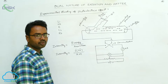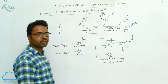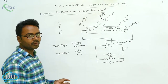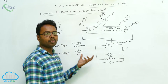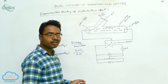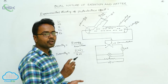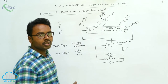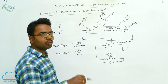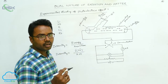At a fixed frequency of incident radiation, increasing intensity means the number of photons is increasing — more photons striking the unit area of the photosensitive plate in unit time. Conversely, decreasing intensity means fewer photons strike the unit area of the photosensitive plate in unit time.